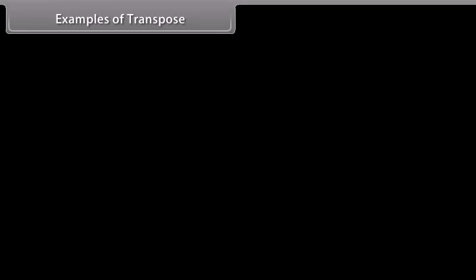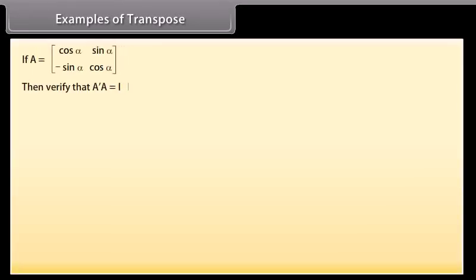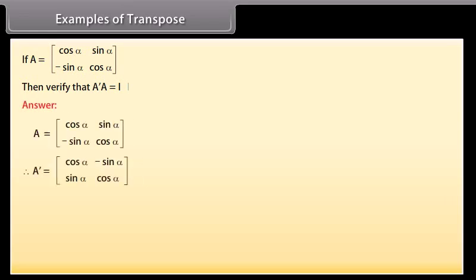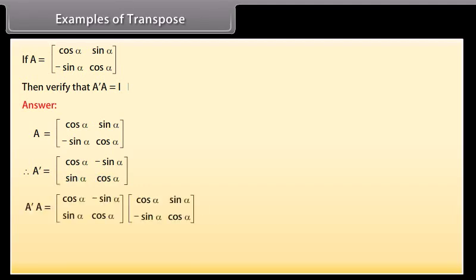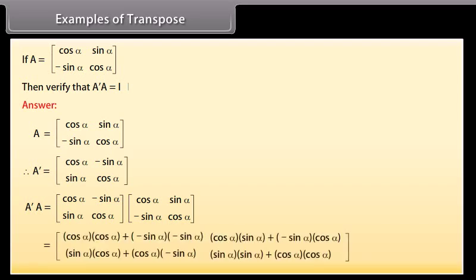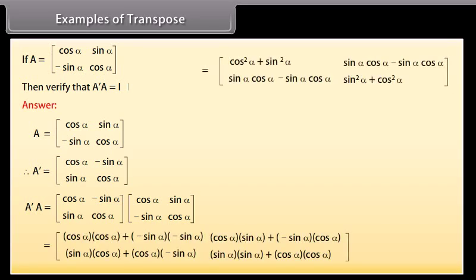Example of transpose: If A is given, verify that A transpose times A is equal to the identity matrix. A is given. Therefore, its transpose A' is the matrix with 1st row [cos α, −sin α] and 2nd row [sin α, cos α]. Multiplying A transpose and A and solving, we get A transpose A is equal to identity matrix. Hence verified.